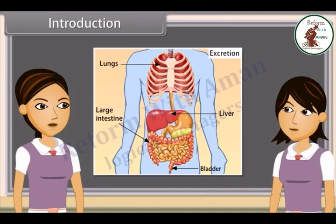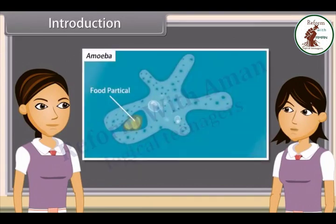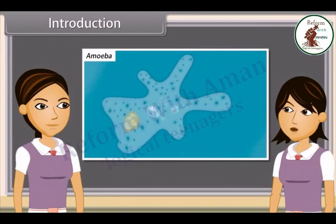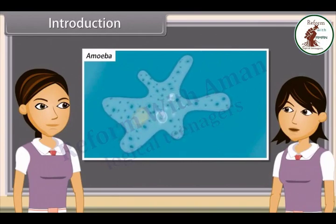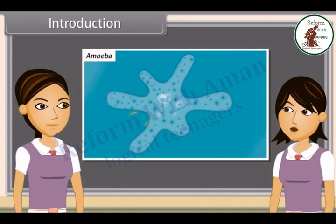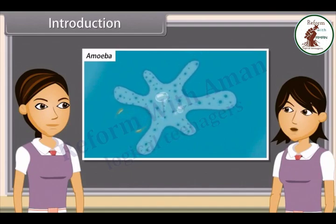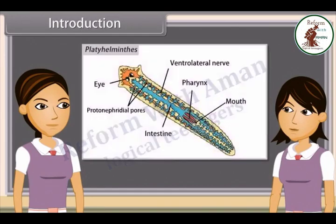The process of excretion is different in different organisms. Unicellular organisms remove these wastes by simple diffusion from the body surface into the surrounding water. For example, in amoeba, it is done through the plasma membrane, while complex multicellular organisms use specialized organs to perform the same function. In Platyhelminthes, excretory organs are protonephridia or flame cells.